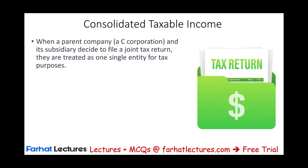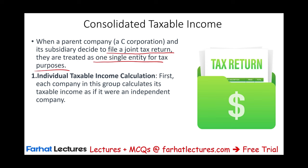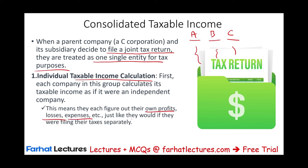When a parent company and its subsidiaries decide to file a joint tax return — to consolidate — they are treated as one single entity for tax purposes. But the first thing they do is each individual company computes their individual taxable income. Step one: each company — let's say companies A, B, and C — first calculates its own taxable income as if they were an independent company, figuring out their own profits, losses, and expenses, just as they would do if filing separately.